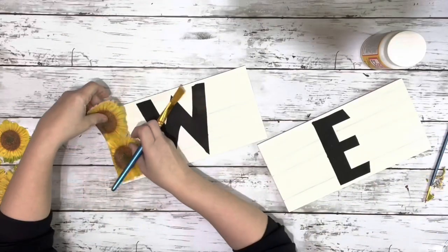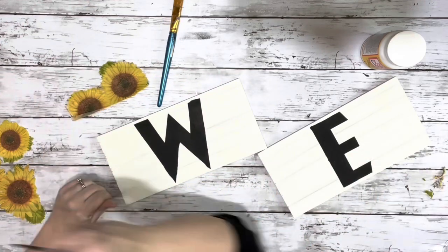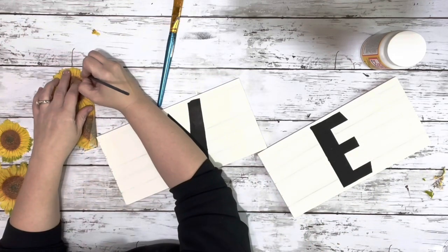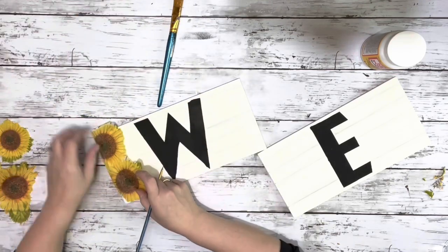And then after I had the napkins ready, I just placed them on each of the pieces, saw where I wanted them to go, and applied Mod Podge to those areas, and then dried the Mod Podge completely.